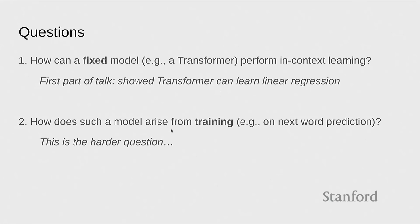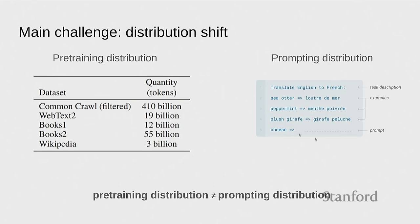Now we're going to move on to the second question: how does this model arise from training? The key thing is that in GPT-3, it's just training on next-word prediction — it's not explicitly training for these tasks, which is the whole point of the emergent behavior. This is really the harder or conceptually harder question. The main challenge is this distribution shift: we're training on basically an internet crawl and prompting with examples that don't show up at training, or are even out of distribution.